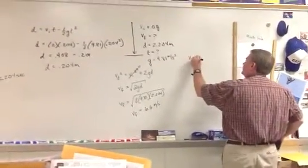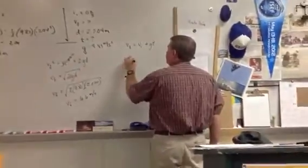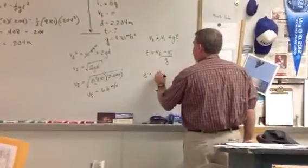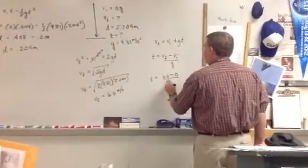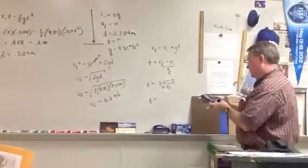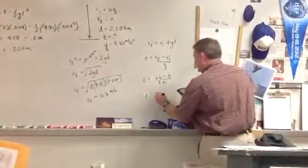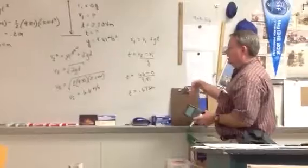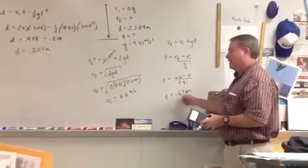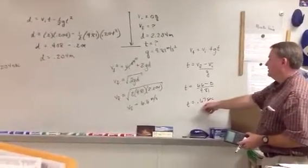So VF is equal to VI plus GT, the plus sign because you're going with gravity. Time is going to be equal to VF minus VI divided by G. Time equals 6.6 minus 0 over 9.81, which equals 0.67 seconds. If you get a different answer by the hundredths place, that's not going to be significant. Your time for the trip down is 0.67 seconds.